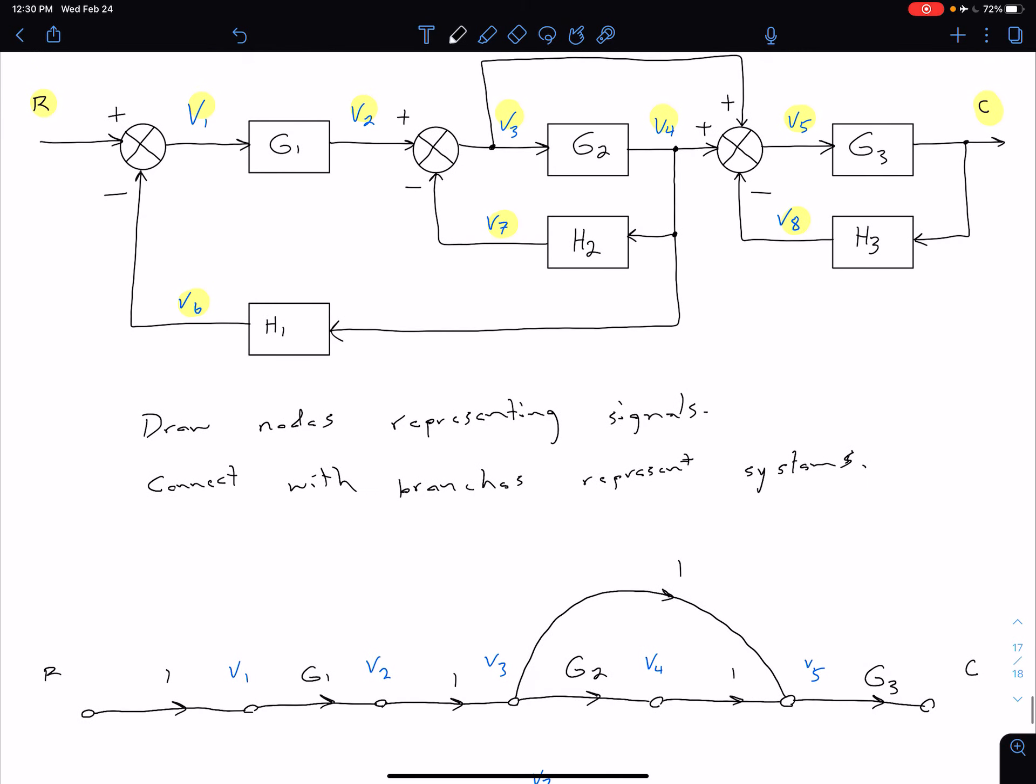So we note that to go from, let's start here. This is going to be our easiest one. So we have signal C coming in here. We multiply that by our H3, and then we're at signal V8.